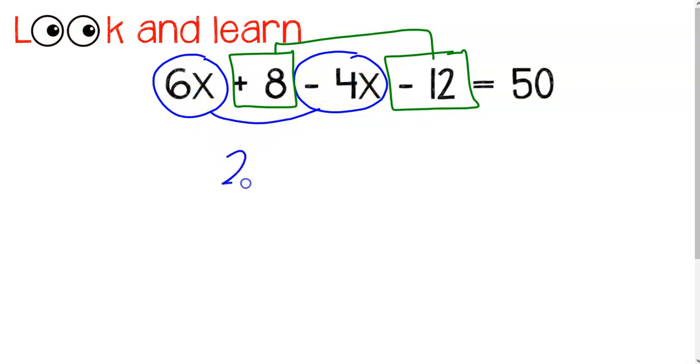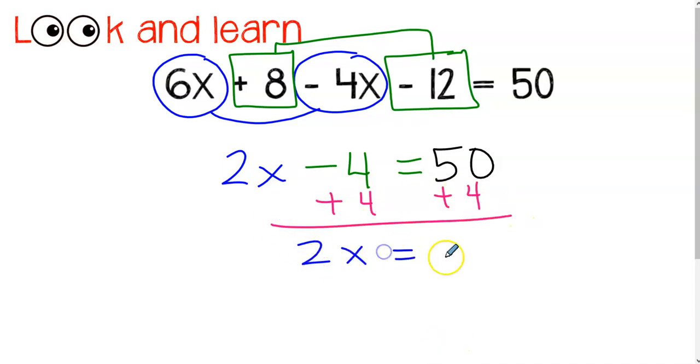Now look at your sign. 6x minus 4x. And then look at your signs in the green constant boxes. 8x minus 12. So be careful when you're rewriting that you're using the right operations. And now I'm going to clear my constant and divide by my coefficient.